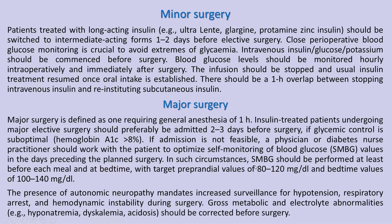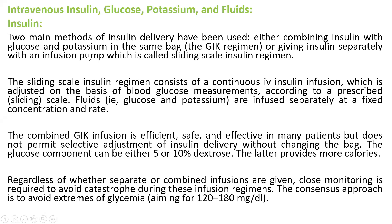We can also see the consequences of hypoglycemia or hyperglycemia. The important component here is intravenous insulin, glucose, potassium, and fluids. Every time we use insulin, we must co-administer glucose and potassium, because insulin is going to change the metabolism of both glucose and potassium, which can result in hypoglycemia or hypokalemia.